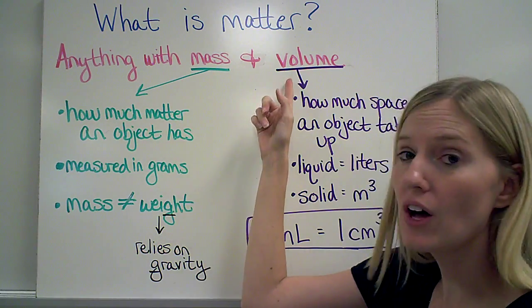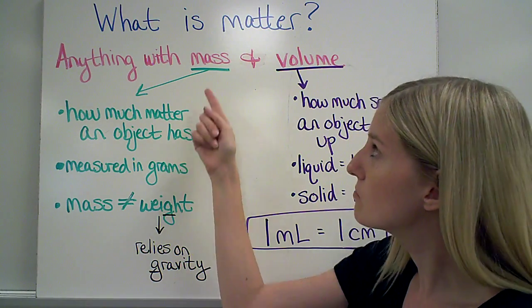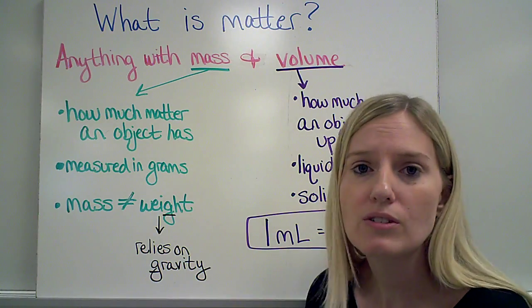What is mass? What is volume? Mass is how much matter an object has. So these terms are related. Matter and mass go together.